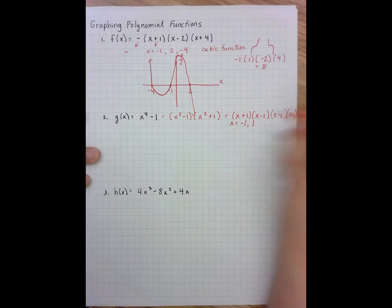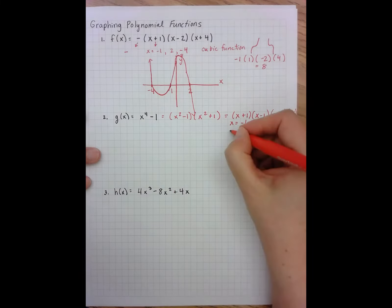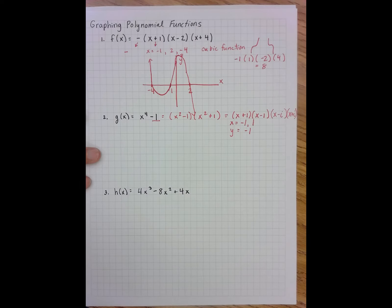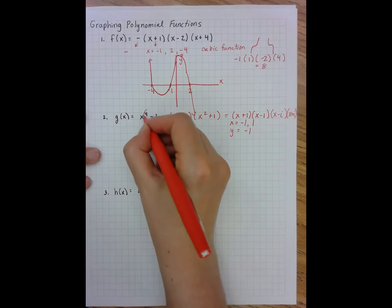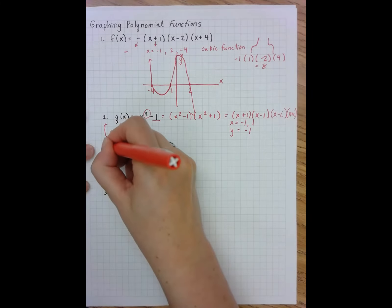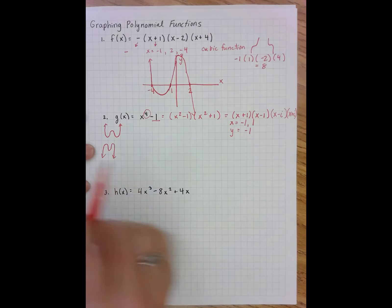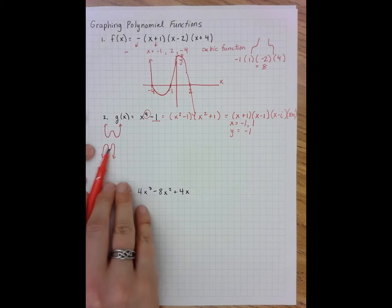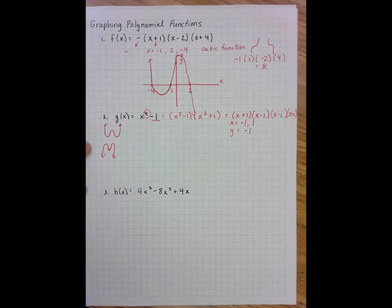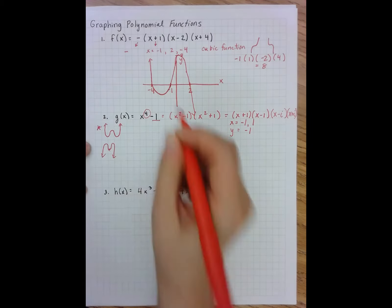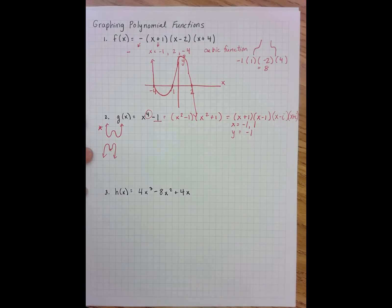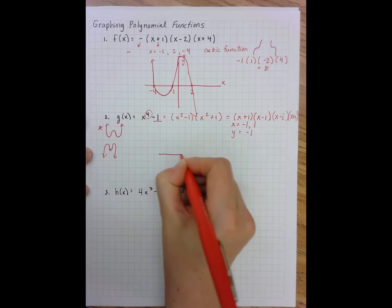So I know two of the x-intercepts: negative one and positive one. My y-intercept is negative one — that's the constant in the function. I also know it's a quartic, which means it will have some u-shaped form pointing up or down, with the possibility of one or three humps. This one faces upward because there's a positive leading coefficient, but I'm not sure how many bumps there are.